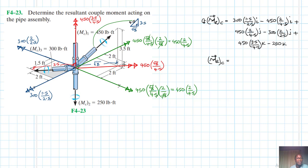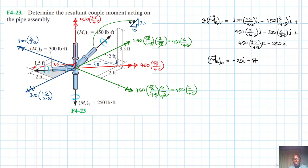Summing everything up, the resultant moment vector is: i-component: 300 times 1.5 divided by 2.5 minus 450 times 2 divided by 4.5, which gives minus 20 i. j-component: 450 times 2 divided by 4.5 minus 300 times 2 divided by 2.5, which gives minus 40 j. z-component: plus 100 k.